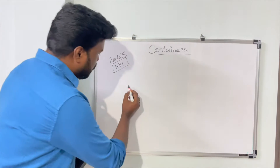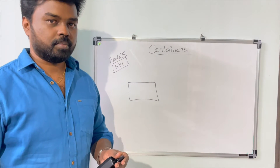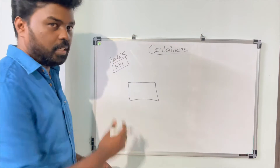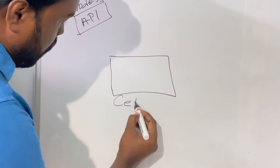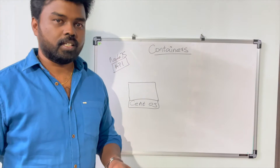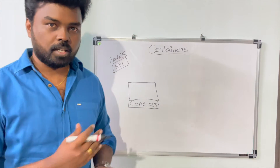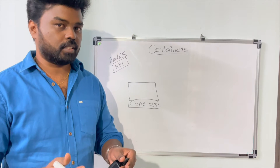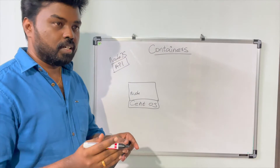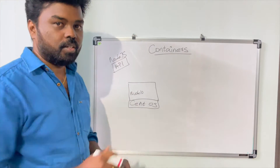Consider we got a server. The first thing we have to do is install the operating system. For example, let's assume that we need CentOS to run this application, so we install CentOS on the server. Once the operating system is installed, we also need to install the necessary tools and binaries. Since it is a Node.js based application, we need the Node.js runtime installed — specifically Node version 10, which the application has been built and targeted for.